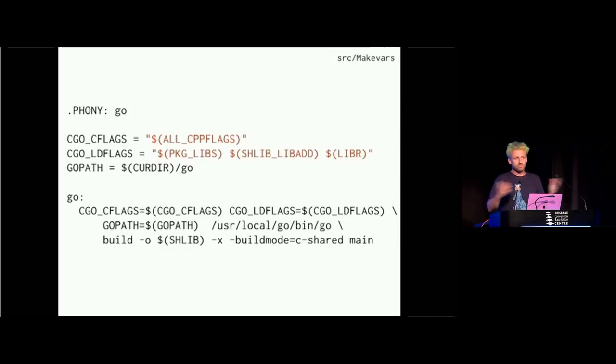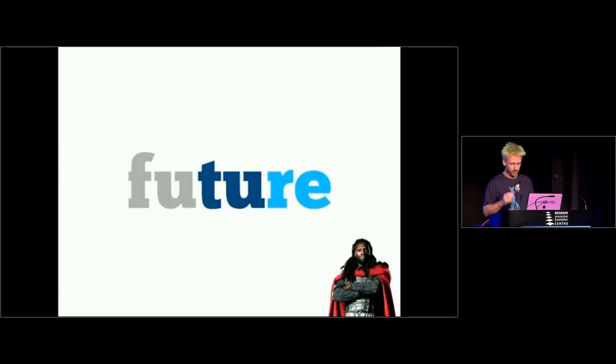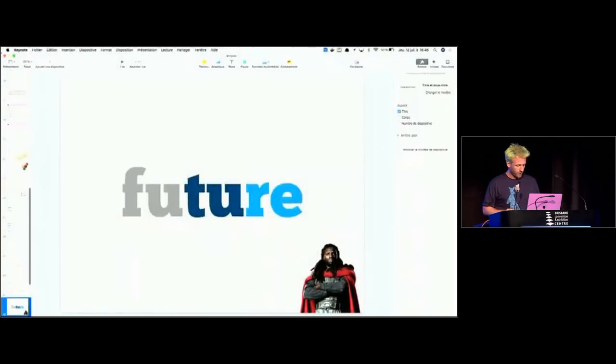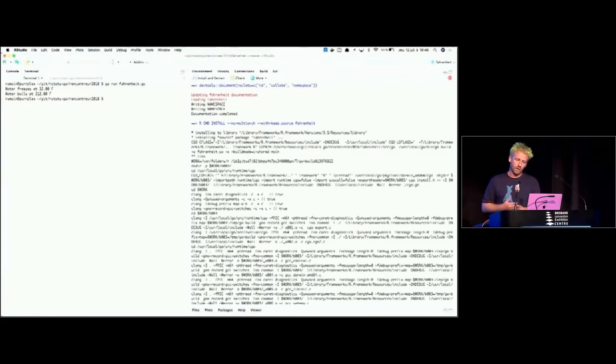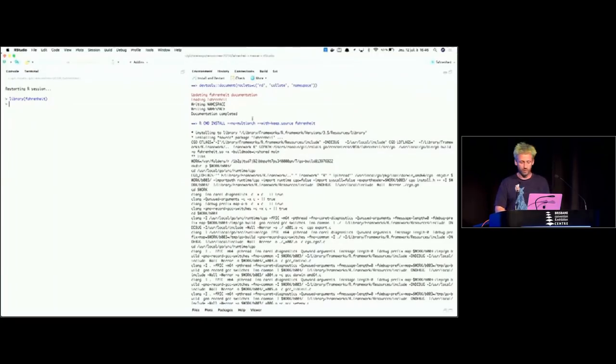But once that's done, then you're ready. You can use your package. So that's quite a lot of stuff that happens. Go compiles all of that. But then you end up with an R package that's just been loaded like any other one. And then you can do Fahrenheit of, it's 20 Celsius now, so temperature now in Brisbane is 68 Fahrenheit.